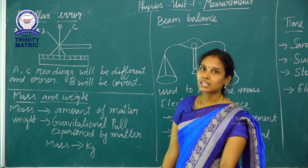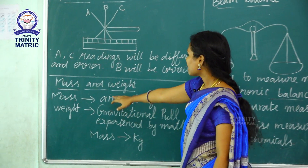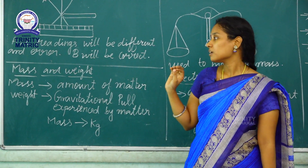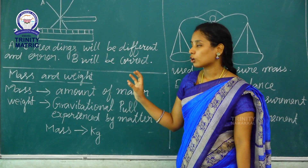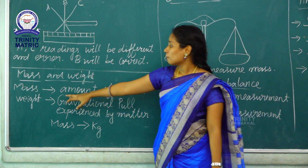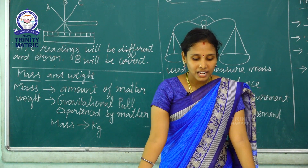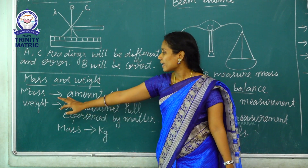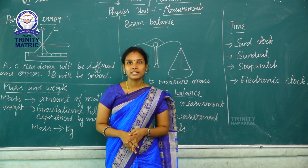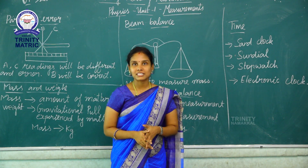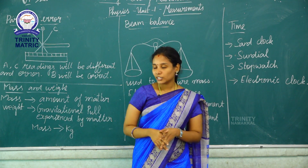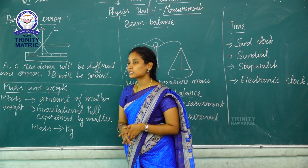Next we have to see mass and weight. Mass is the amount of matter — one measure of the amount of matter present in an object. Weight is the gravitational pull experienced by matter. The weight is directly proportional to the mass on earth's surface. On the moon, where gravitational force is lesser than on earth, the weight will reduce but the mass will remain the same. The unit of mass is kilogram, represented by the letter KG.